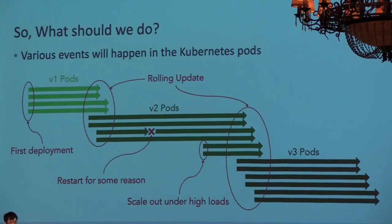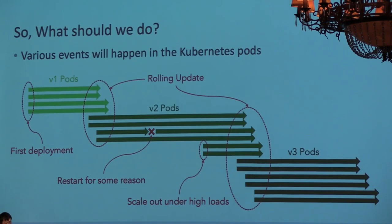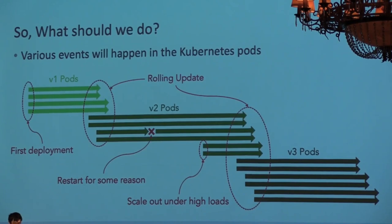So, what specific efforts should be made to achieve it? To consider this, let's take a look at an overview of the life cycle of pods on Kubernetes. I will mainly consider Java applications deployed on Kubernetes with deployment resources. On the first deployment, several pods are newly launched.